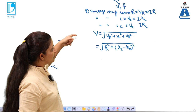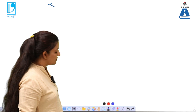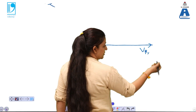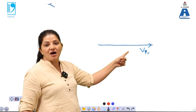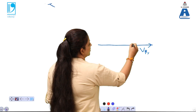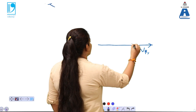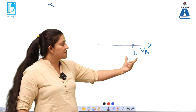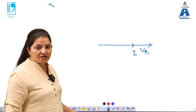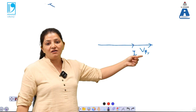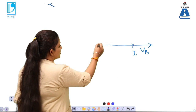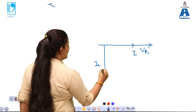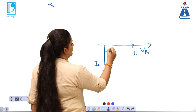Next is the phasor diagram, which is more important here. In a resistor, there is no phase difference between voltage VR and current I — they are in the same direction. In case of inductance, the current lags behind the voltage by an angle of 90 degrees. So if this is the voltage direction, the current IL lags behind by 90 degrees.